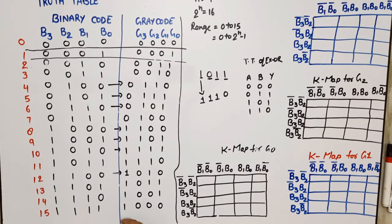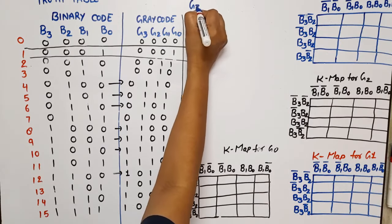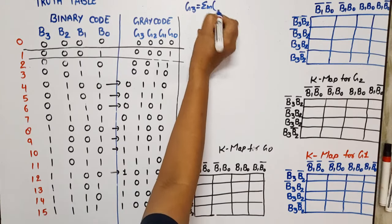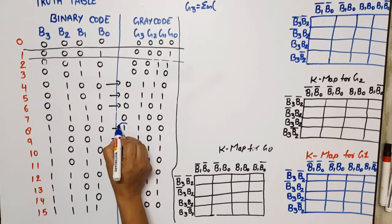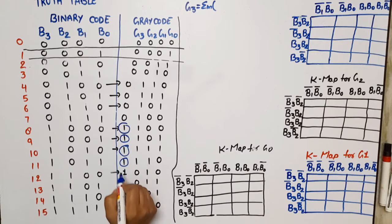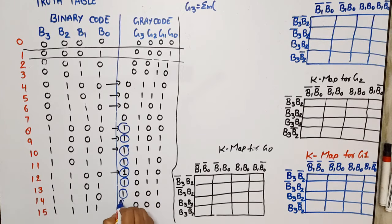Now we write the output variables G3, G2, G1, and G0. We'll plot K-maps to find simplified Boolean expressions. For G3, the minterm expression is: G3 = Σm(8, 9, 10, 11, 12, 13, 14, 15).